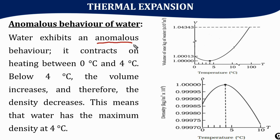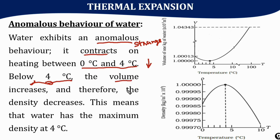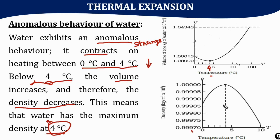Now we discuss a strange behavior of water. Most substances expand on heating, but water between 0°C and 4°C actually contracts. At all other temperatures, water behaves normally and expands. This means that volume decreases and density increases in this range. The density of water is maximum at 4°C. On a volume versus temperature graph, the volume is least at 4°C, and therefore the density versus temperature graph shows that the density of water is highest at 4°C.